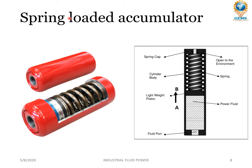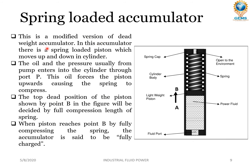The spring loaded accumulator is similar to the dead weight accumulator, except the dead weight is replaced with a spring. The spring is enclosed in the cylinder body, open to the environment at the top. The center contains the spring, and there is an inlet port on the accumulator cylinder. In this accumulator there is a spring loaded piston which moves up and down in the cylinder. Oil under pressure from the pump enters into the cylinder through port P.